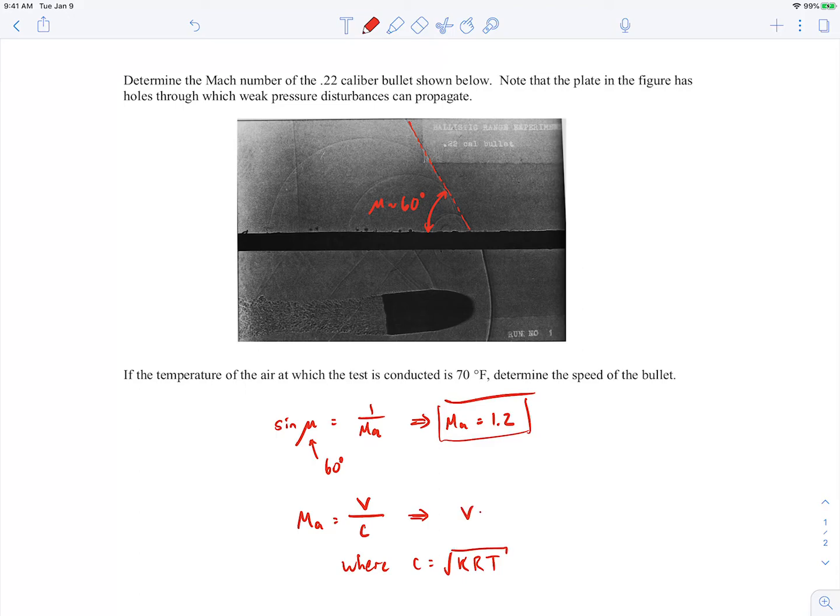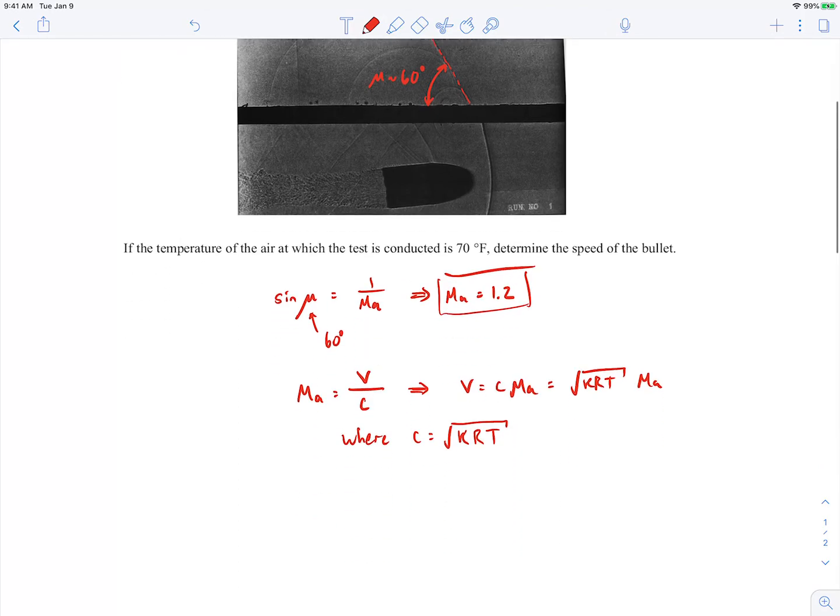So we can rearrange this to solve for the velocity. The velocity will be speed of sound times the Mach number, which is square root of krt times the Mach number. So since we're dealing with air, the specific heat ratio is 1.4, that's an easy one to remember.